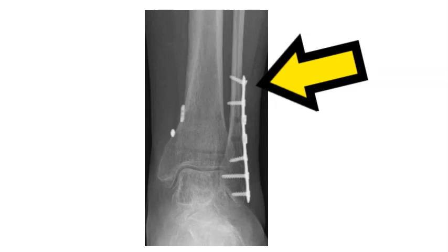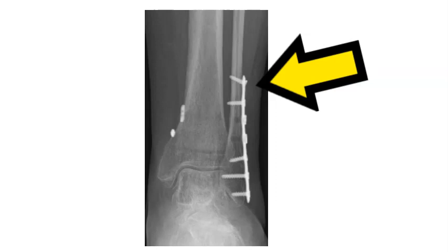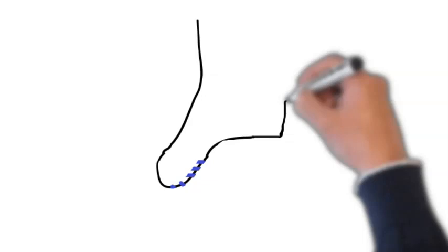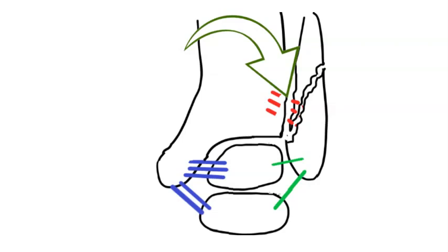He's likely to get a plate on the fibula and some tight wraps, which we've previously seen for syndesmosis injuries. Given the mechanism, Jackson Hastings has likely suffered a syndesmosis injury — those red lines broken in addition to the fracture. The tight wraps are there in addition to the plate to stabilize his syndesmosis at the same time.